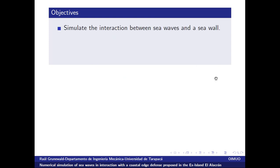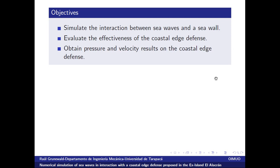The objectives of this work are: first, simulate the interaction between sea waves and a sea wall; second, evaluate the effectiveness of the coastal edge defense — meaning the capability that the wall has to let pass the lowest water level; and third, obtain pressure and velocity results on the coastal edge defense.